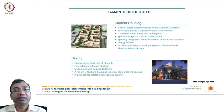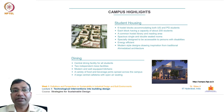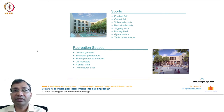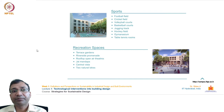For student housing, six hostel blocks accommodate both UG and PG students, each block having a capacity of about 200 students. There is a common hostel library and reading area, spacious single and double-seated rooms, especially designed to be accessible to persons with disabilities — energy efficient, modern style designs drawing inspiration from traditional Ahmedabad architecture. The dining facilities include a central dining facility for all students, two independent mess facilities, modern and well-equipped kitchen, a variety of food and beverage joints spread across the campus, and a large central cafeteria with open-air seating.